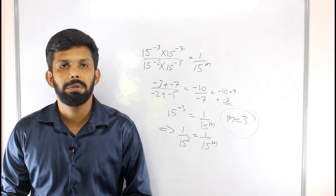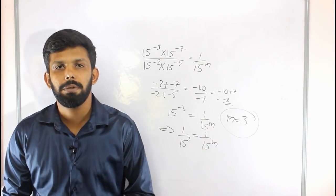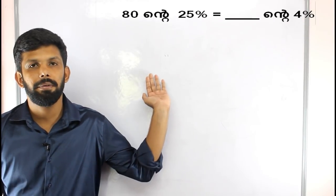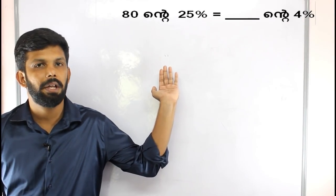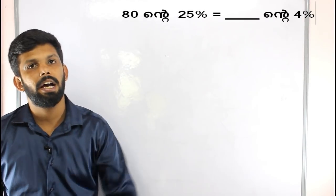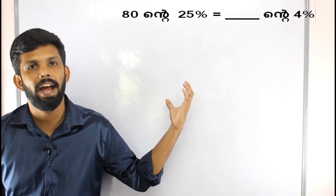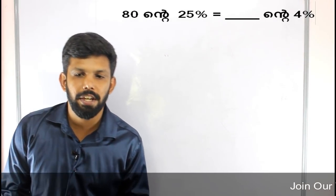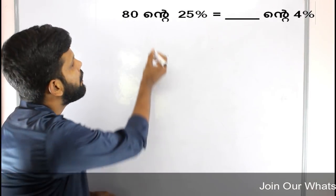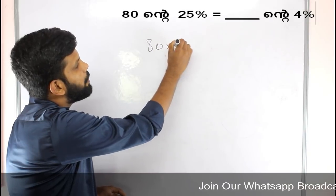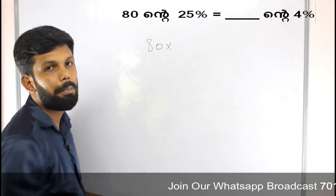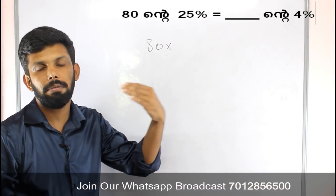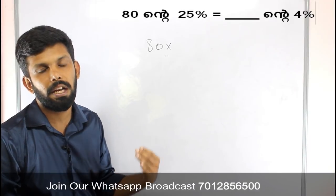We will deduce that rule. We will take the rule: 8 to the power 0 minus 25 is equal to dash — we can do 8 into 25 percentage.